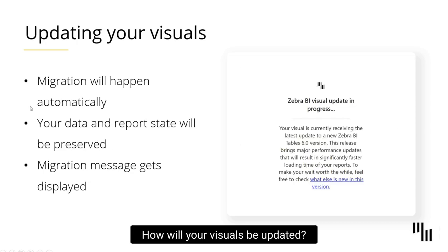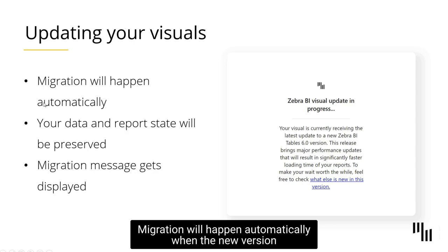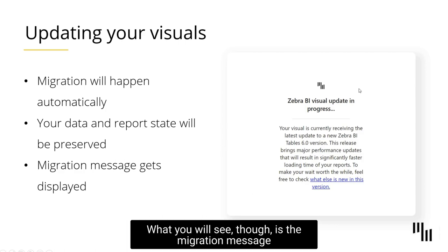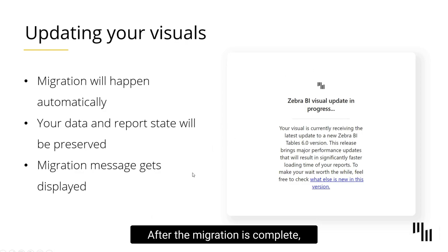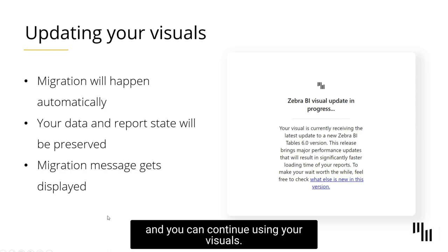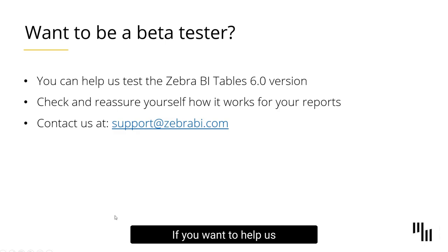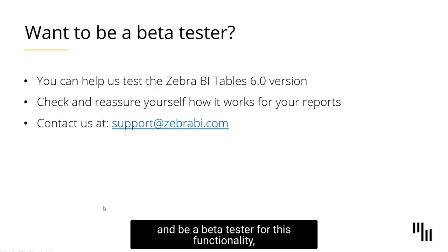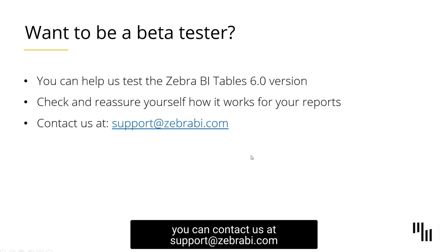How will your visuals be updated? Migration will happen automatically when the new version is live on AppSource. Your data and report state will be preserved, so you don't need to worry about the transition. What you will see is the migration message as shown on the right. After the migration is complete, the message will be removed and you can continue using your visuals. If you want to help us as a beta tester, you can contact us at support@zebrabi.com and we'll send you the visuals for testing.